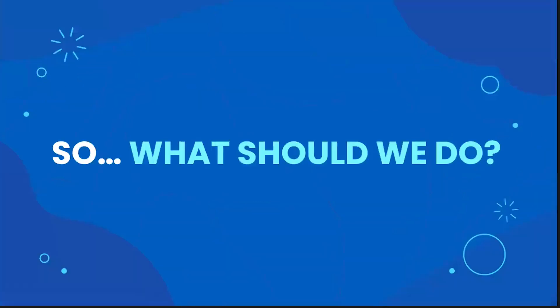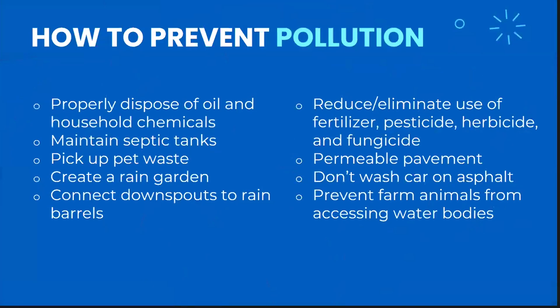So, what should we do? Pollution, especially non-point that you can't trace back to a specific source, can be a very daunting topic to approach. Though challenging to implement, there are solutions to this problem. Here are some ways that you, as an individual, can prevent pollution: properly dispose of oil and household chemicals, maintain your septic tank, pick up pet waste, create a rain garden, connect downspouts to rain barrels, reduce or eliminate the use of fertilizer, pesticide, herbicide, and fungicides, avoid disturbing soil on your property unless absolutely necessary, install permeable pavement, wash your car on the grass instead of on asphalt. And for the farmers, prevent animals from accessing water bodies like streams, ponds, etc.